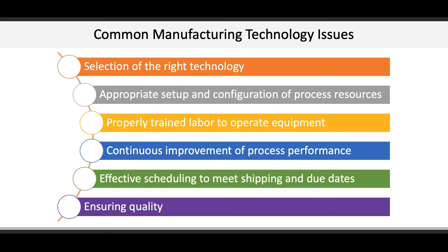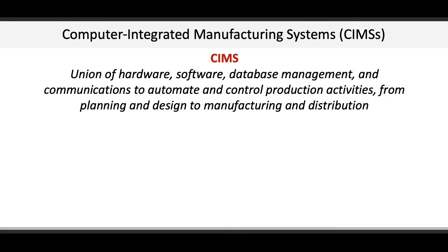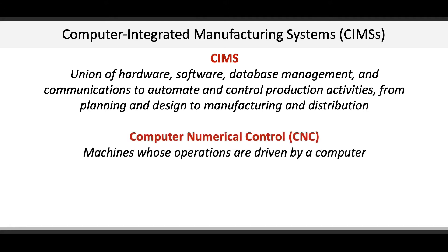Next, we learn about computer integrated manufacturing systems, or CIMS, which is the union of hardware, software, database management, and communications to automate and control production activities from planning and design to manufacturing and distribution. CIMS might include computer numerical control, or CNC, where machine operations are driven by a computer. A great example of this are the automated drive units in Amazon fulfillment warehouses that are controlled by a central system.